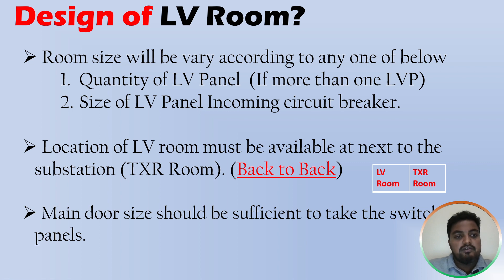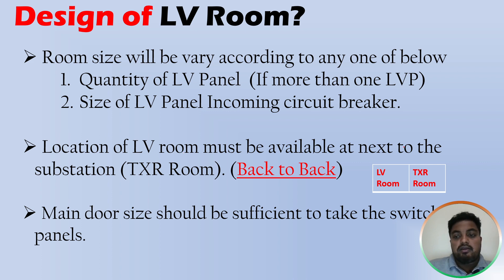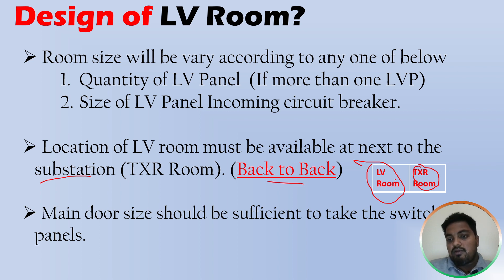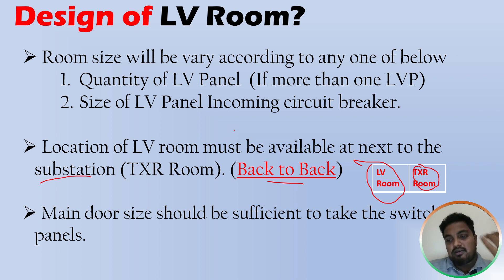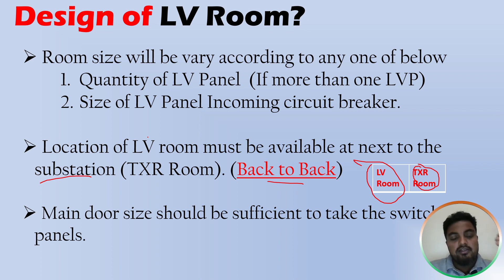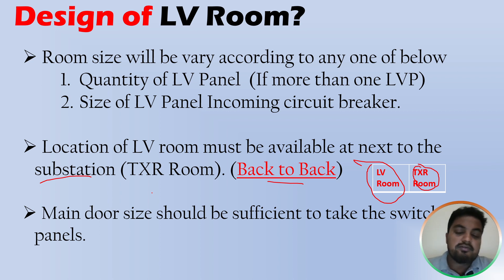Another key point is the location of the LV room — it must be located next to the substation, also called the transformer room. We place them back to back because the cable from the transformer feeds the LV panel and we cannot run this cable over a long distance. The reasons are: first, cost, and second, it is not practical to run high-current LV cables long distances. Locating the LV room adjacent to the transformer is both cost-effective and operationally simple.